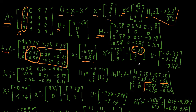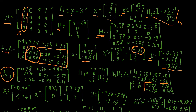Now I can get vector u = x minus x prime: the first column vector of the submatrix minus x prime, giving (1 − 1.29, −0.58, −0.58) = (−0.29, −0.58, −0.58). Plugging into the formula gives the second Householder matrix H2 prime — a 3×3 matrix: 0.78, −0.44, −0.44; −0.44, 0.11, −0.89; −0.44, −0.89, 0.11. You can plug that into a calculator or do it by hand.